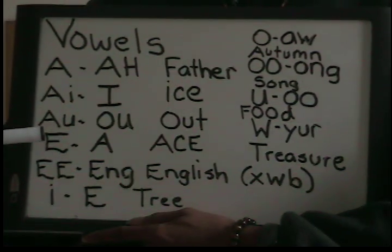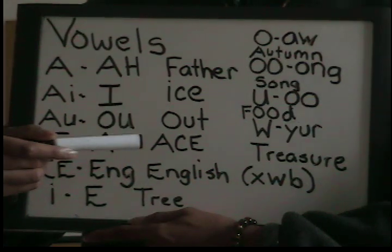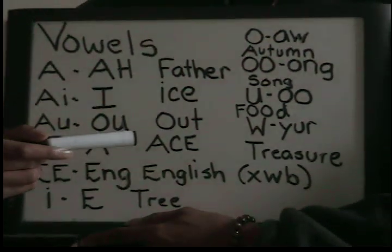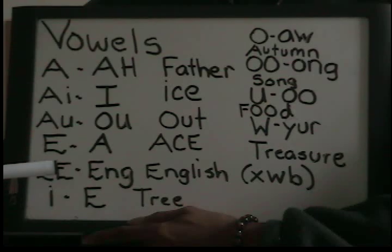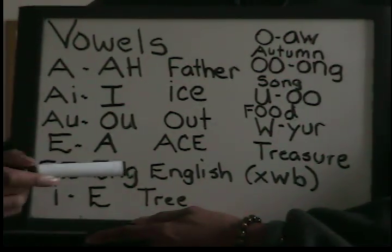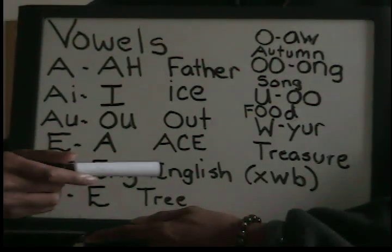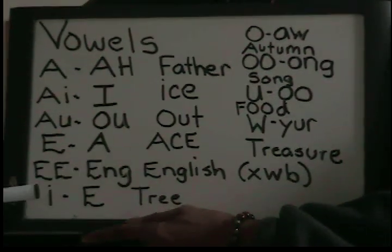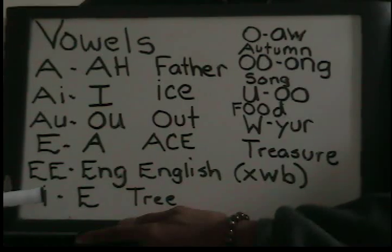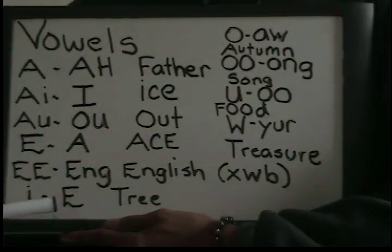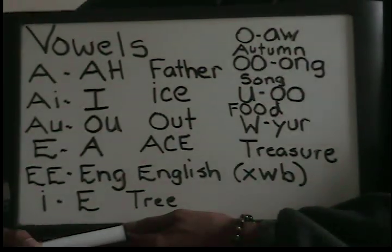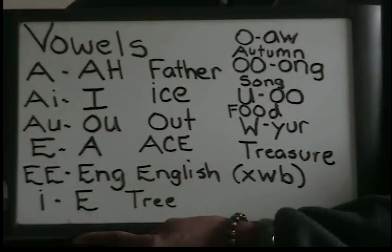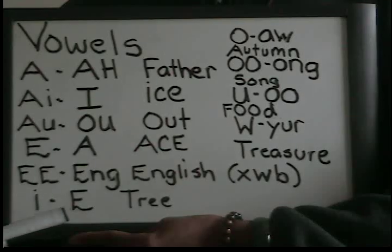E in Hmong RPA is an A sound, as in 'ace' — so if you see an E, it's an A sound. Double E — EE — is an actual E sound as in 'in' or the start of 'English.' And the letter I sounds like an E, as in 'tree.'